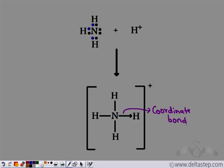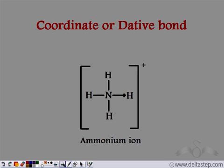Such type of compounds in which one atom completely shares the lone pair of electrons with another atom which is short of one lone pair of electrons is known as a coordinate or a dative compound. So in this case, this bond is a coordinate bond or a dative bond. We can see two types of bonds here — the bond with an arrow is a dative or coordinate bond, and a single bond is a covalent bond.